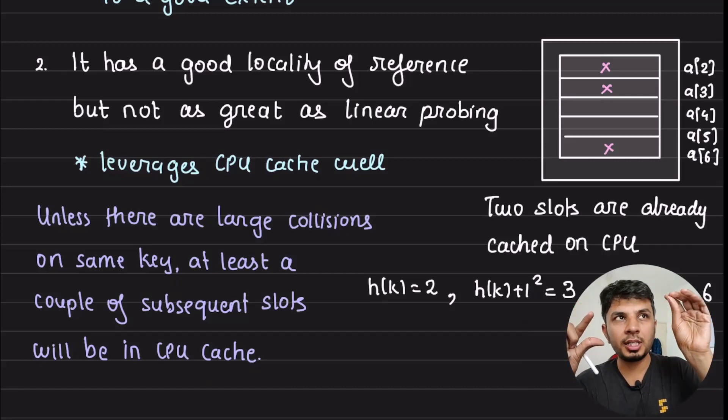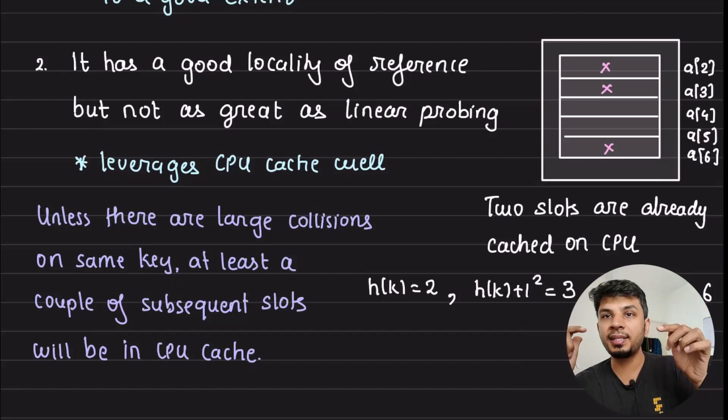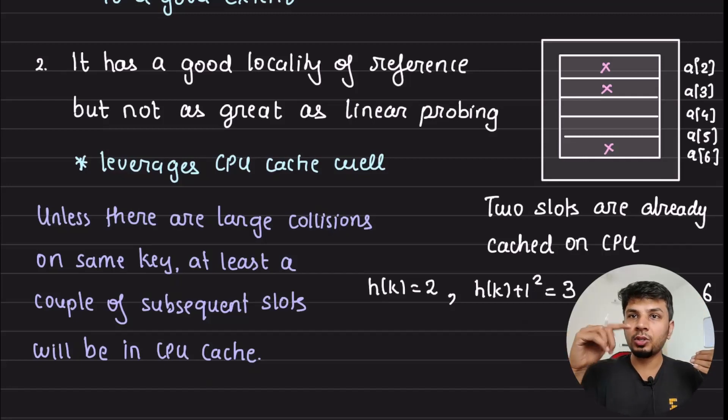Second point, now this is what also was an advantage of linear probing is that quadratic probing has a good locality of reference, but it is not as great as linear probing. We know that how linear probing leverages CPU cache in order to make iterations faster. So, just to reiterate on that, if you are trying to access A[2], let's say you have an array A with 10, 15, 30 items, and you are trying to access A[2]. So, when you are accessing this from main memory, this page, this memory page would be brought into CPU cache, and from there it would be accessed.